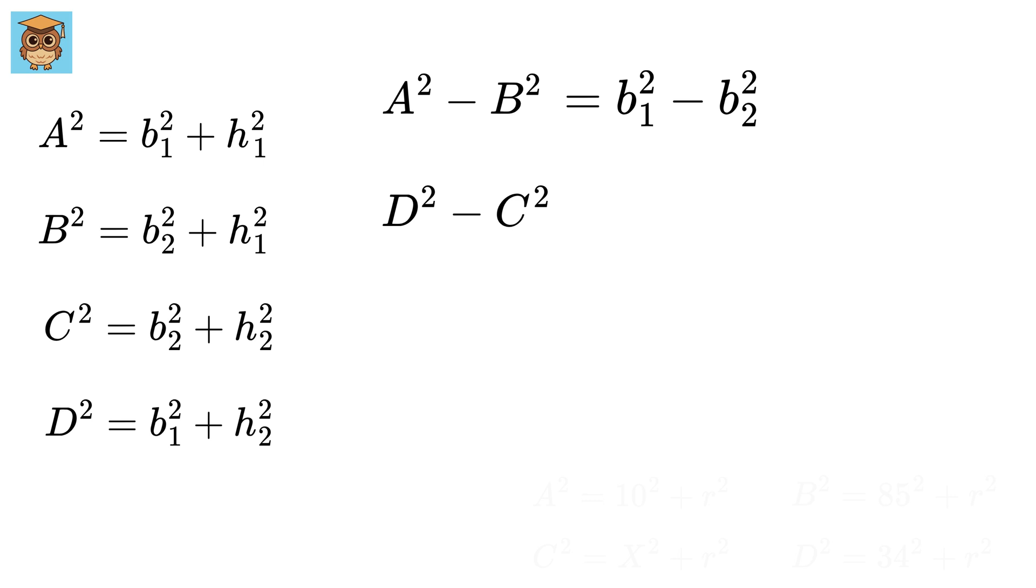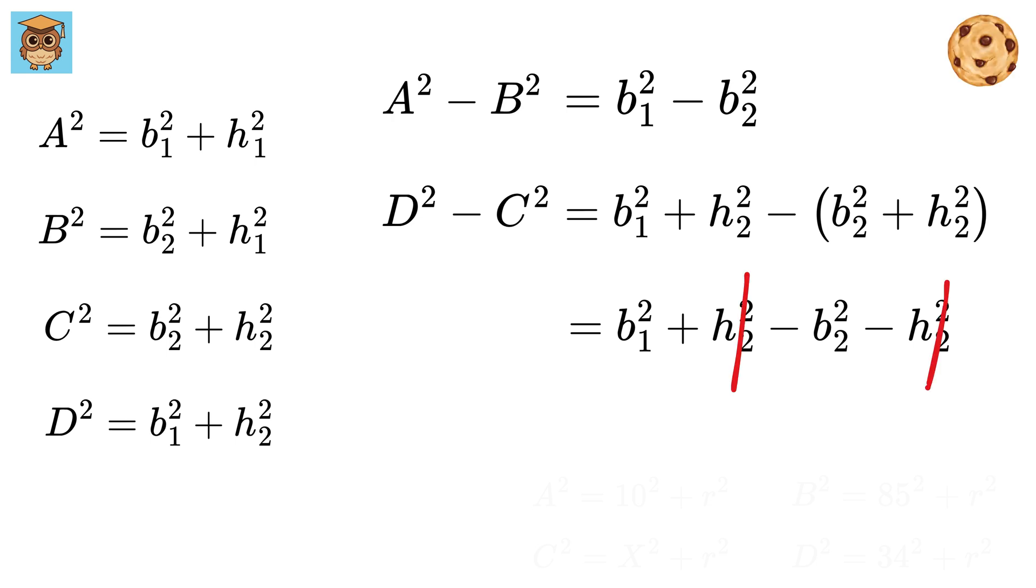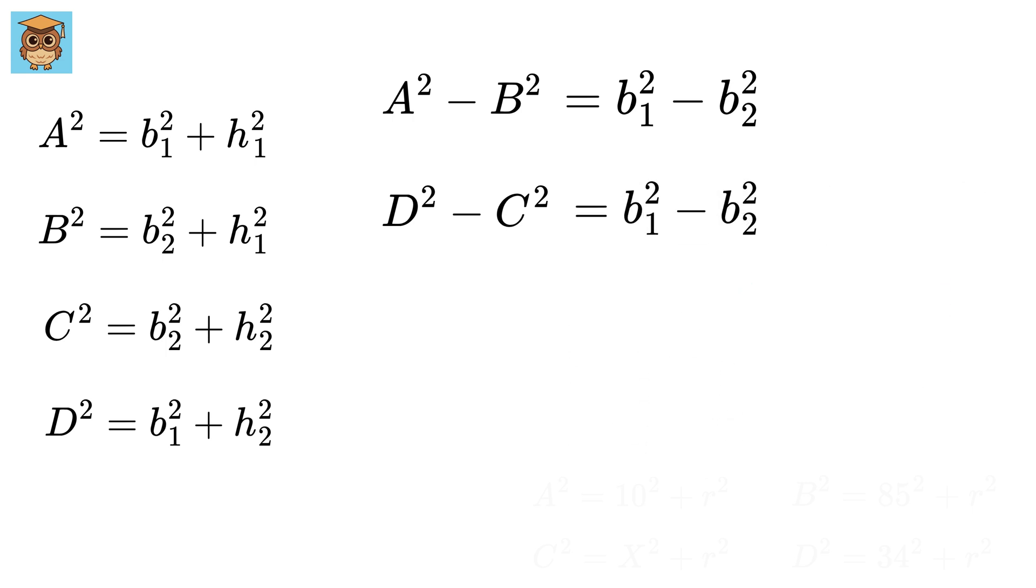Similarly, subtract d square with c square to get this minus this. Expand it to get this. Again, look, h2 square gets cancelled and we are left with b1 square minus b2 square. But, this is same as a square minus b square. So, we have a square minus b square equals d square minus c square.